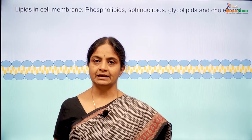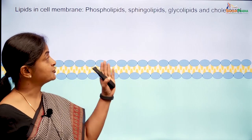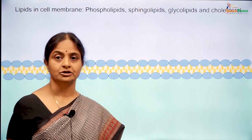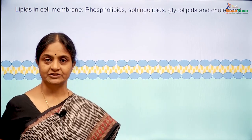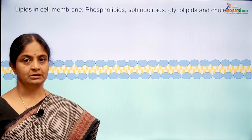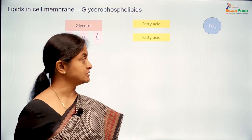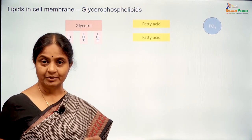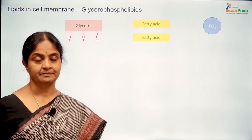The lipids of the cell membrane can be classified into phospholipids, sphingolipids, glycolipids and cholesterol. We will look at the phospholipids first. It is better to refer to them as glycerophospholipids because they have a glycerol backbone and they have to be differentiated from the sphingophospholipids.